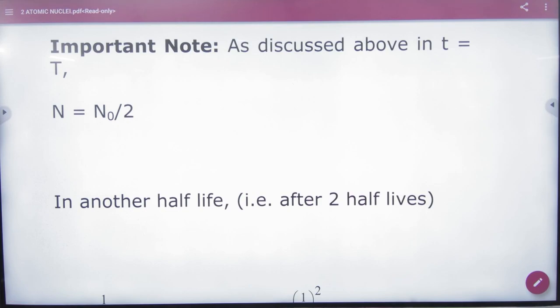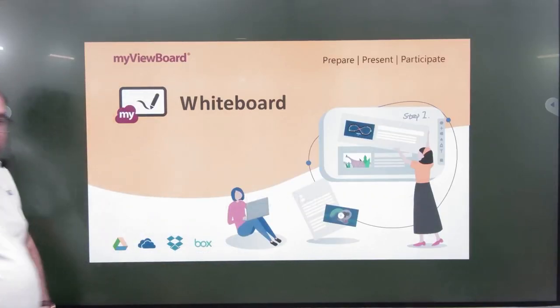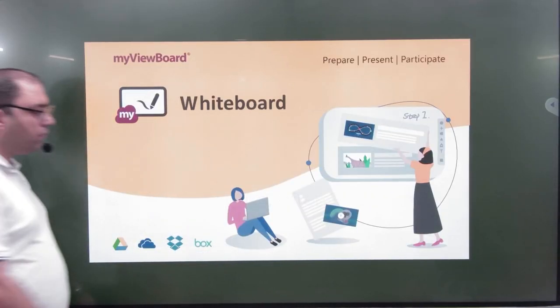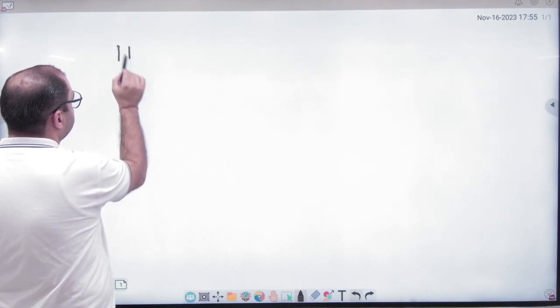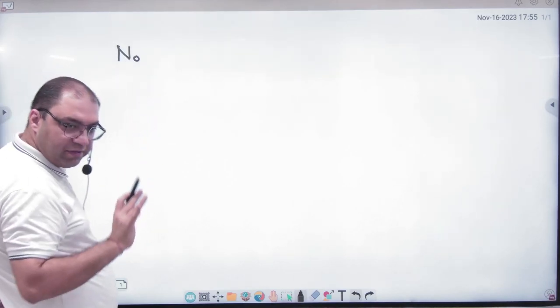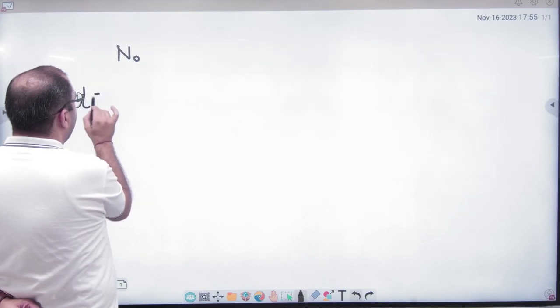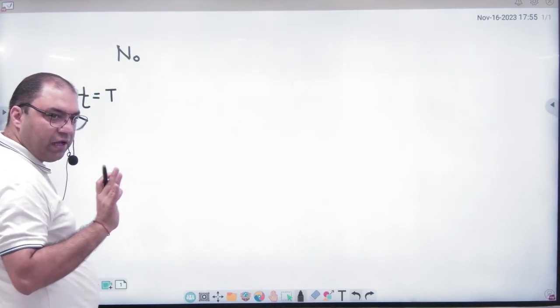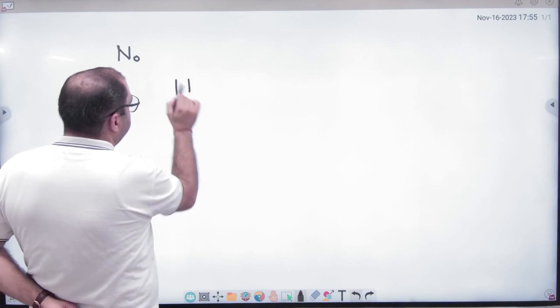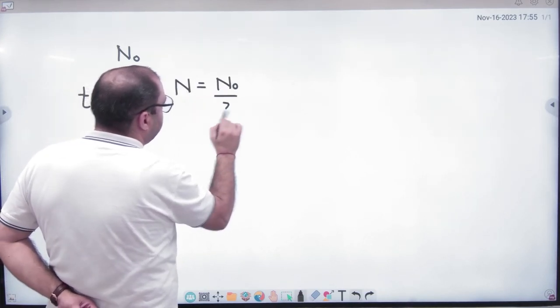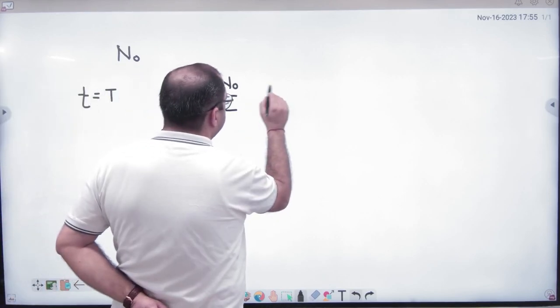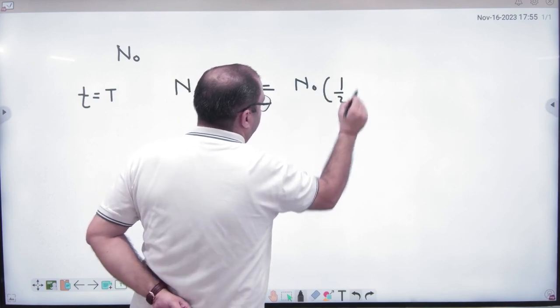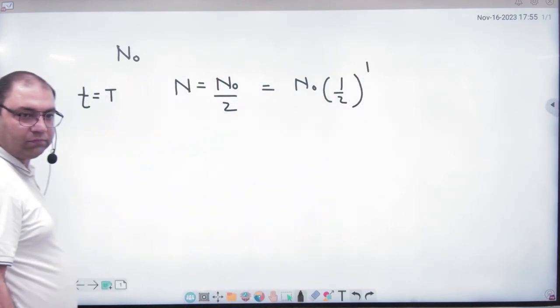The next part is very important. What is mentioned is that suppose you have number of atom N₀. N₀ number of atom you have at time t is equal to T, first half-life period number of atom n value N₀ divided by 2. Because one half-life number of atom I can write N₀ half raised to power 1.